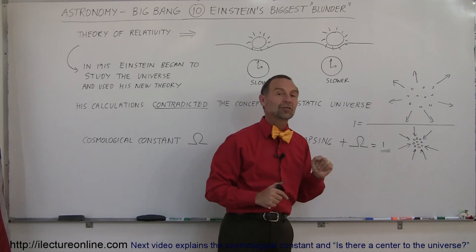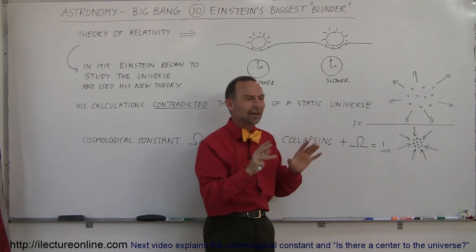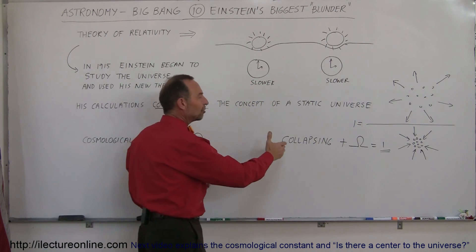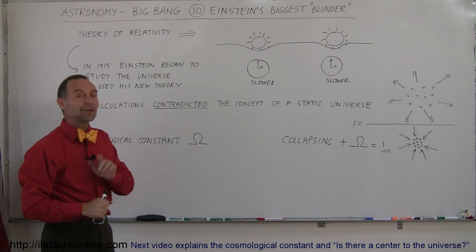So Einstein wasn't that far off saying, is there something there that will prevent the universe from imploding or will the universe expand forever? But in his true concept that he had here when he thought, oh, I need something there so that my equations and my thinking matches the general concept of whatever else he's saying, that was a big mistake.